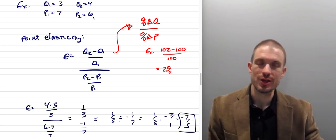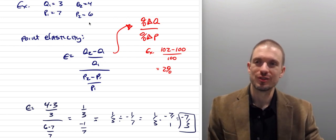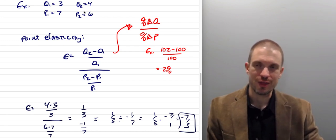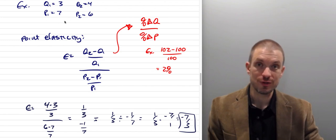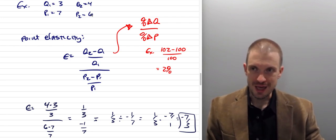Right? We could also compute the elasticity at the point 4, 6. How do we do that? Well, let's just switch our identity of which is point 1 and which is point 2, and rather than talking about a price decrease from 7 down to 6, we could talk about a price increase from 6 up to 7. And that would compute the elasticity at the point 4, 6.